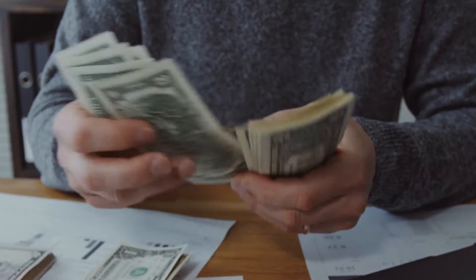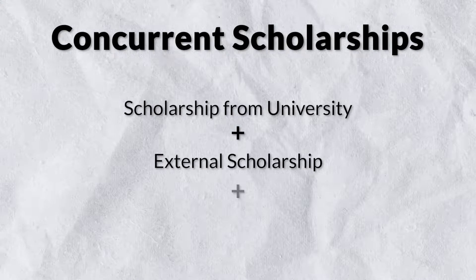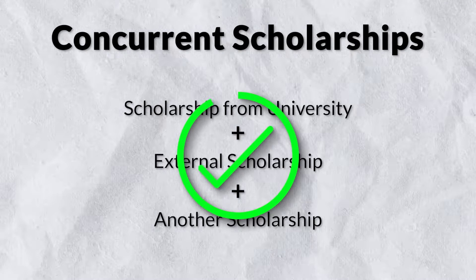Let's talk about the types of extra income you can have as a graduate student in Canada. First, the best source of extra income is to get an external scholarship. Scholarships in Canada are concurrent scholarships, meaning you can have multiple scholarships at the same time. Not every country allows this, but in Canada you're eligible to have concurrent scholarships with most universities.